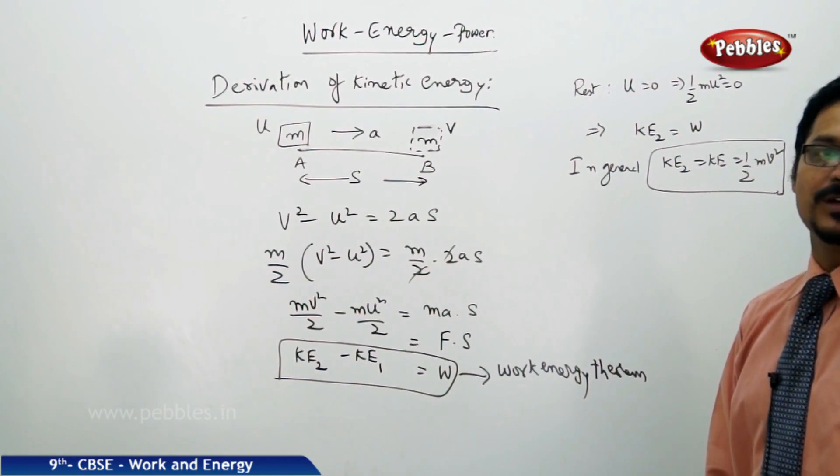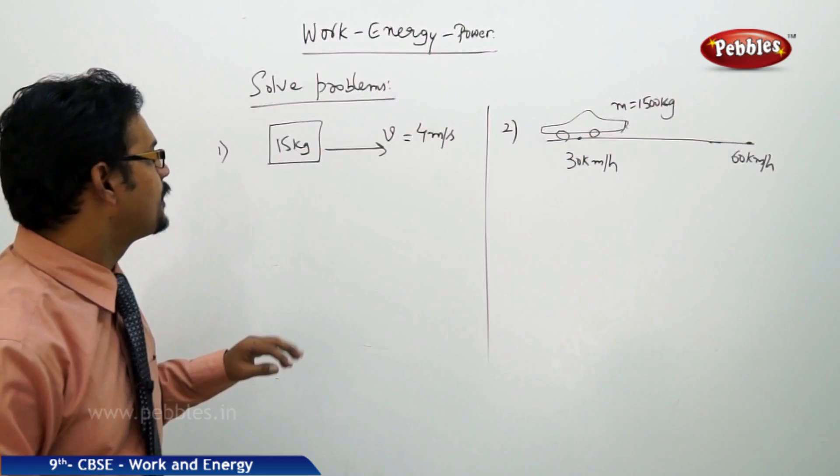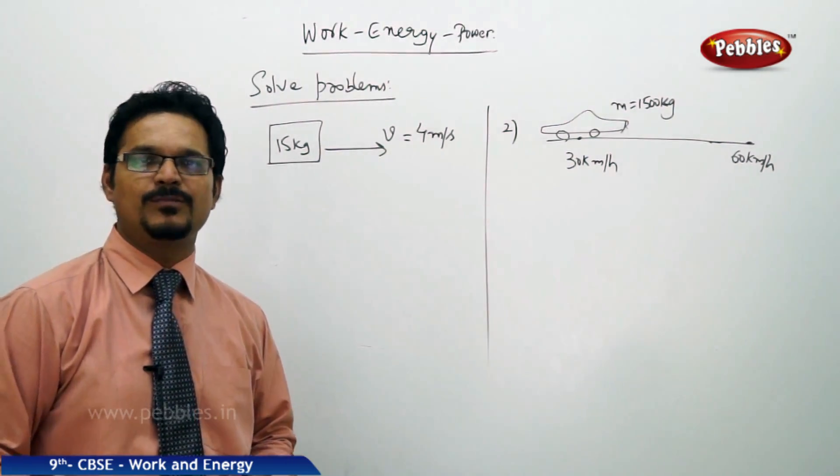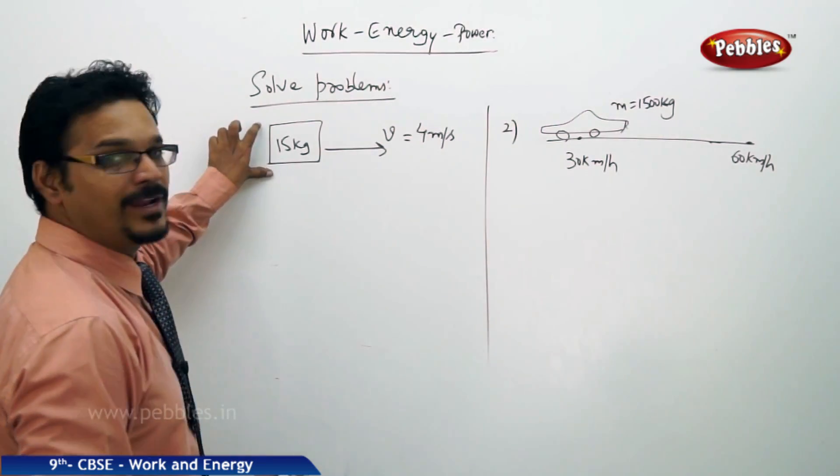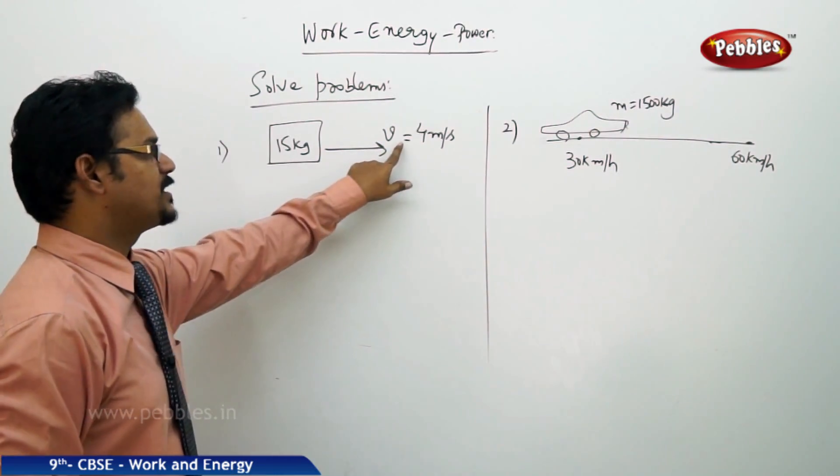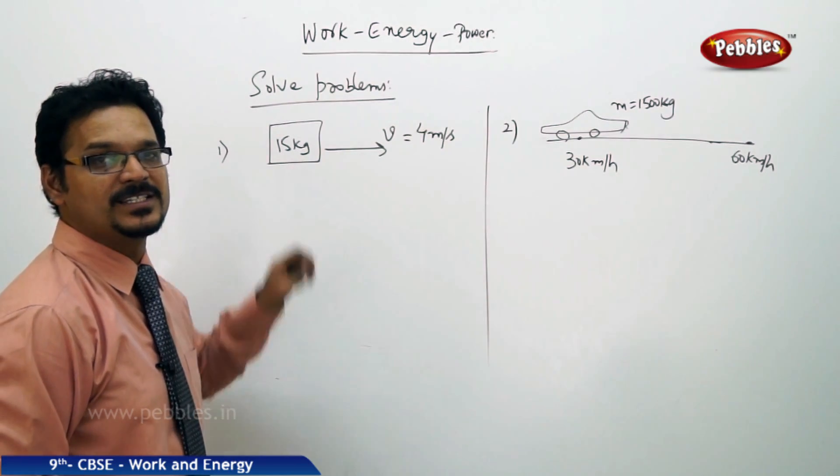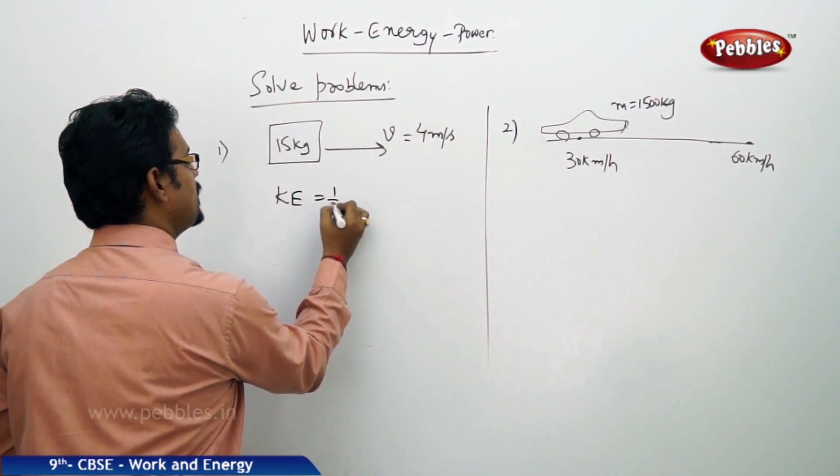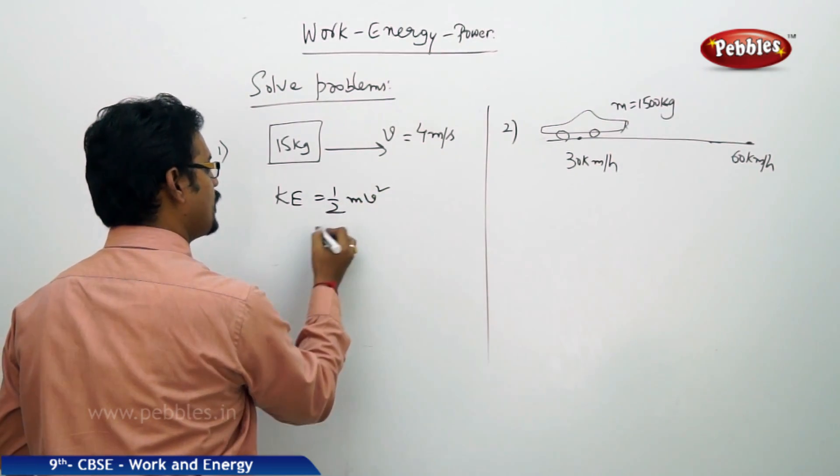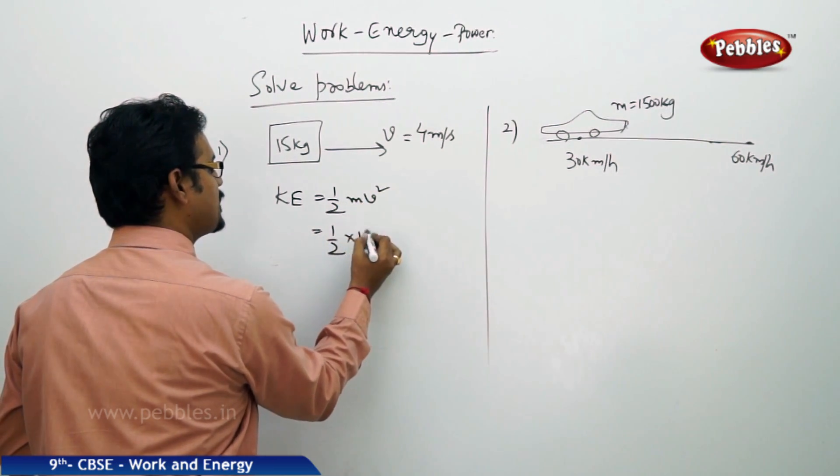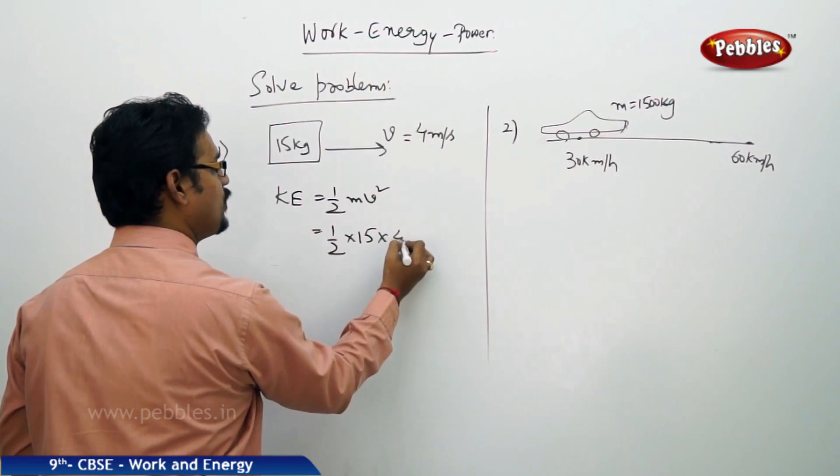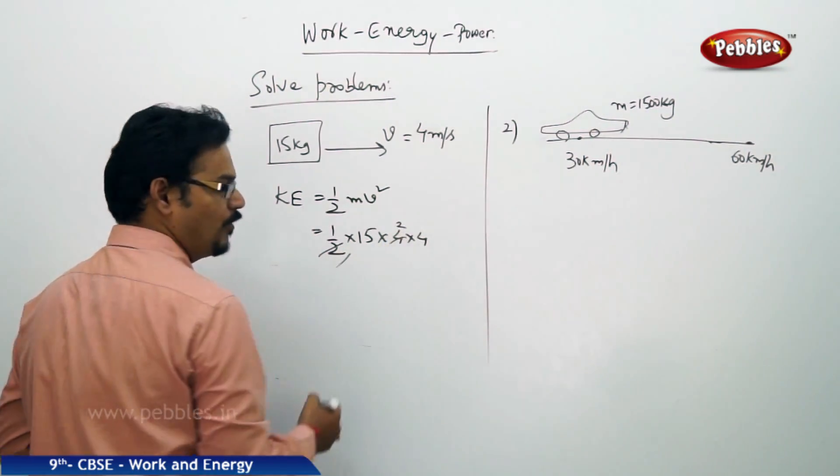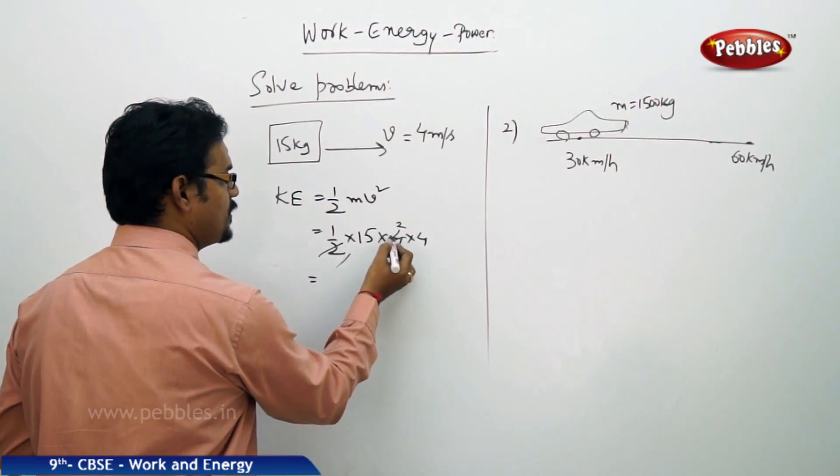Now you can see here we are trying to solve two problems based on kinetic energy formula. See the first one: there is a body of mass 15 kg moving with velocity 4 meters per second, what is its kinetic energy? It is very simple: KE equals half mv squared, so half into mass 15, v squared is 4 into 4, which equals 120 joules.